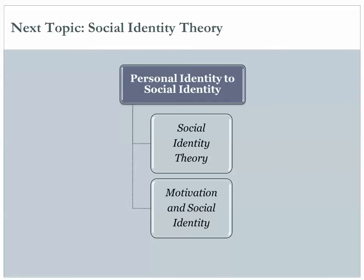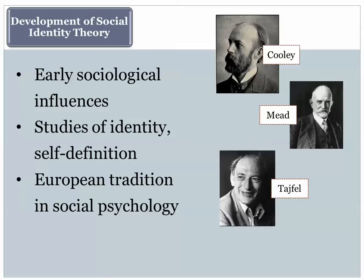Our topics are social identity theory and motivation and social identity. The theory has roots in both psychology and sociology. Charles Cooley, an early sociologist, talked about the 'we' within each one of us — that who we are changes over time depending on the groups that we belong to. George Herbert Mead, the symbolic interactionist, talked about the self as a process which undergoes change through social interaction.